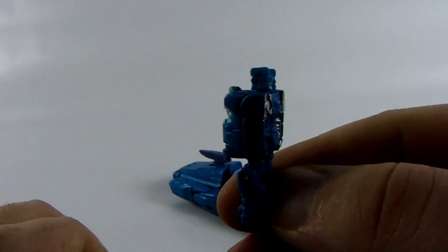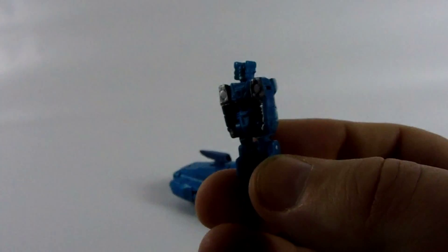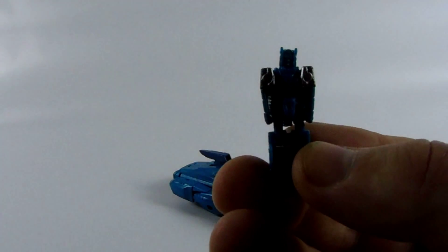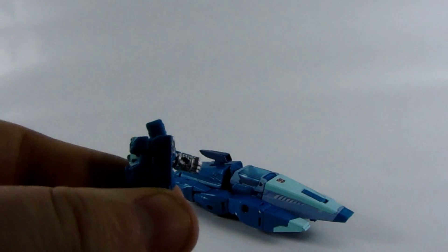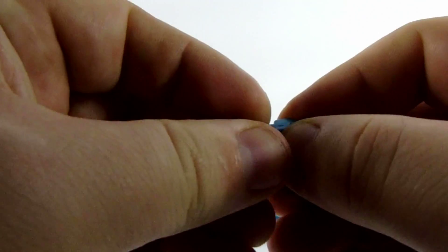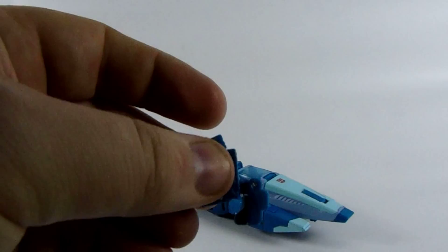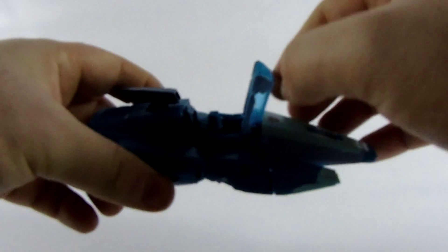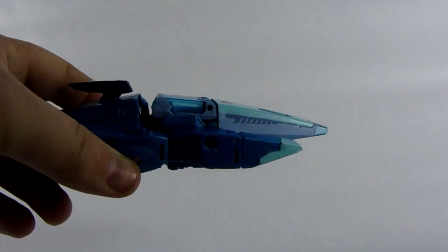This is the Titan Master, or otherwise known as Headmasters, but for some reason they've renamed them. This is Hyperfire. It's got little paint apps on his face, little silver paint apps on his arms. His arms do move up slightly. Nice little bit of sculpted detail on them. His legs move up and they've got little bends in the knees so you can sit him inside that cockpit quite nicely and get that closed.